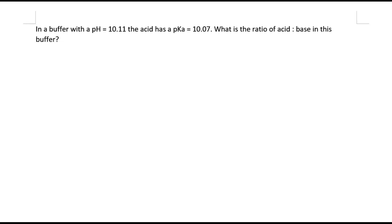Now in this example we need to calculate the ratio of acid and base in a buffer. We see that the pH of the buffer is higher than the pKa, which indicates to us that we probably need more base than we need acid.